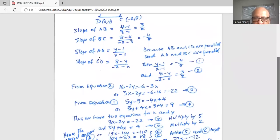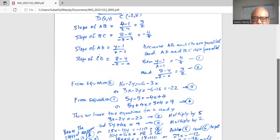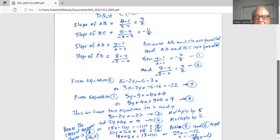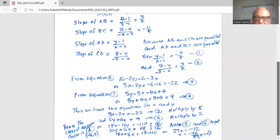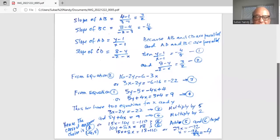With us, we have two equations for x and y. And so, multiply equation 3 by 5 and multiply equation 4 by 2. Because that way, if we multiply equation 3 by 5 and equation 4 by 2, we will be able to eliminate y. So when we multiply equation 3 by 5, we get 15x-10y is equal to -110. And when we multiply equation 4 by 2 on both sides, we get 10y+8x is equal to plus 18 or just 18.